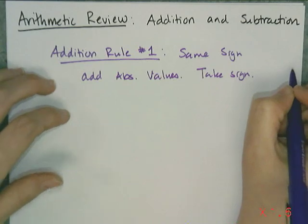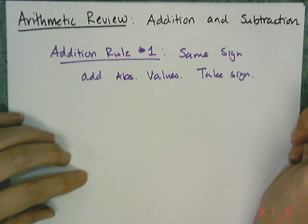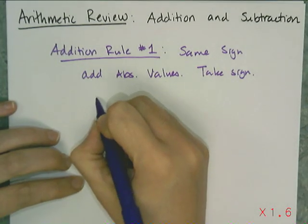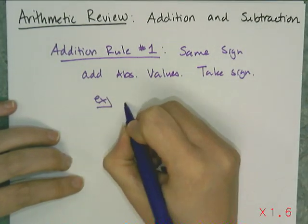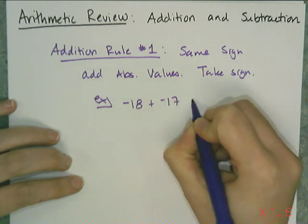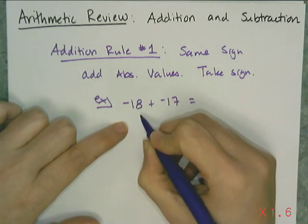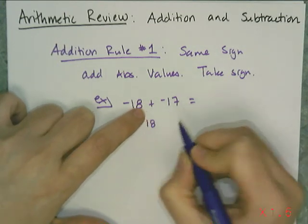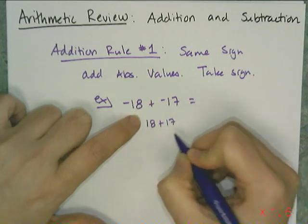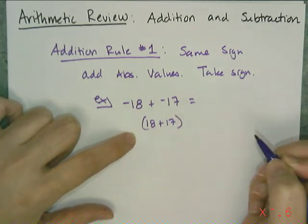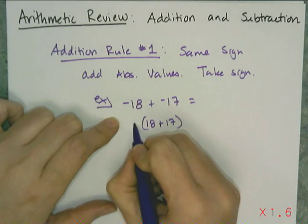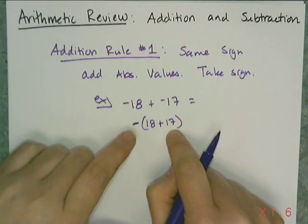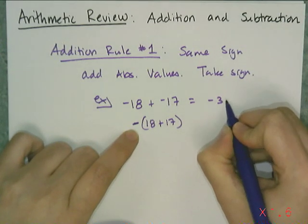If they're both positive, the answer is positive. If they're both negative, the answer is negative. I'm not going to go over how to add two positive numbers. So let's look at adding two negative numbers, like negative 18 plus negative 17. The absolute value of negative 18 is 18, and the absolute value of negative 17 is 17. I'm going to add 18 and 17 together, but they're both negative, so I'm going to make the whole thing negative. 18 plus 17 is 35, but since they're both negative, my answer is negative 35.